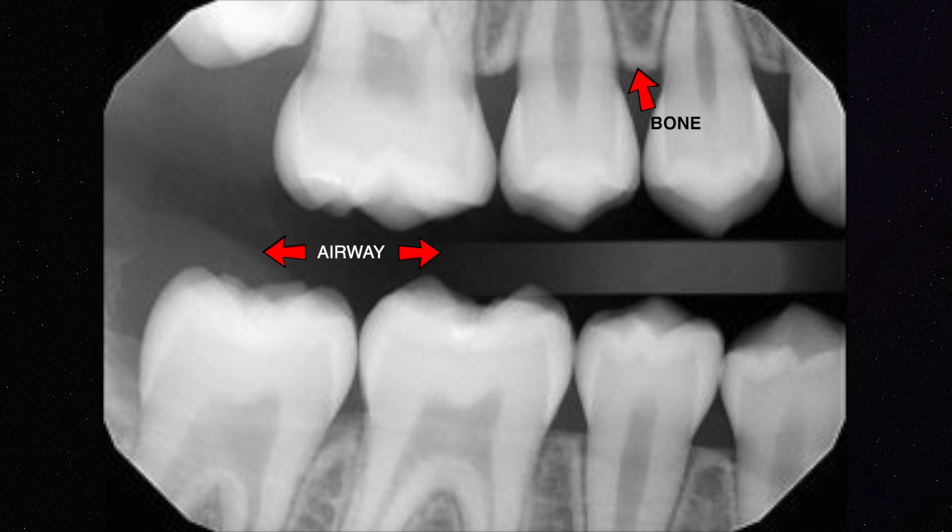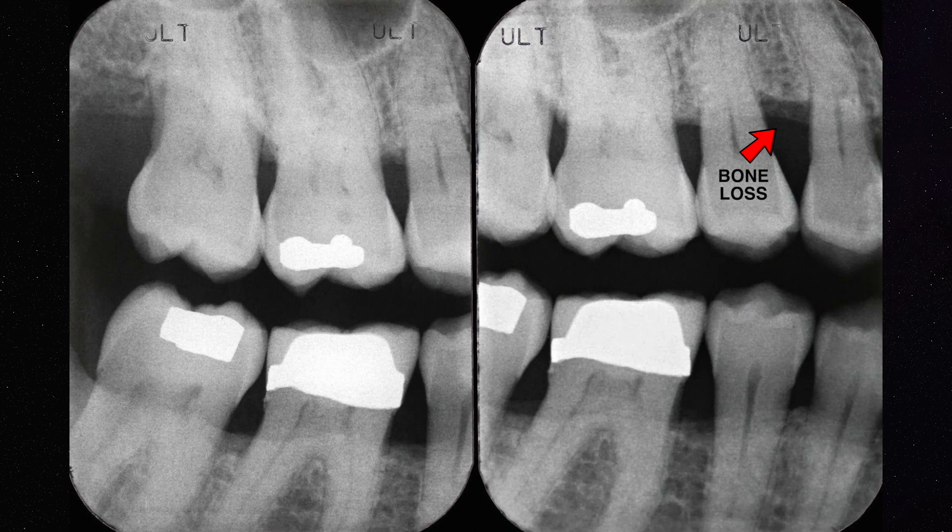Looking at the periphery of the tooth, you can see the adjacent teeth, the bone that encompasses and holds the tooth in place, and a little bit of periodontal ligament around the tooth. This image shows us a lot of important information to help diagnose whether something is wrong with the tooth.